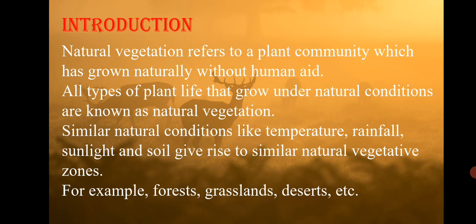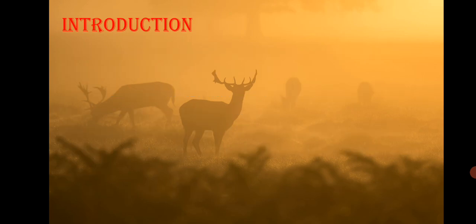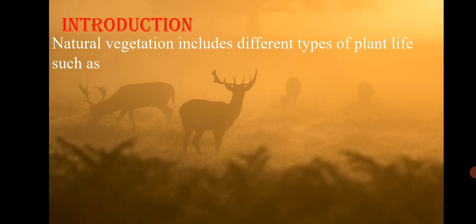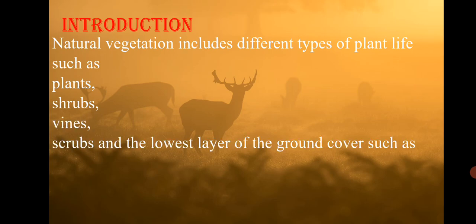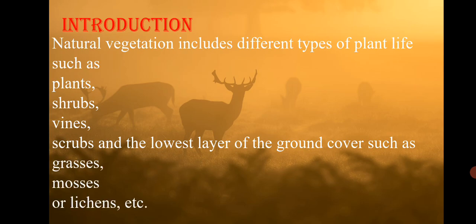Natural vegetation includes different types of plants — such as large trees, shrubs and medium-sized trees, vines, and the lower ground layer that covers the ground, for example grasses, mosses, and lichens. Some plants are also specialized in conservation of water.